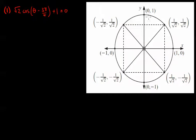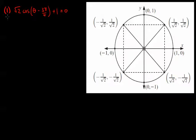Now that we've got all the skills to tackle looking at how to solve a complicated trig equation like this, we're probably going to use the unit circle with these coordinates to answer this question. What we have is root 2 times cos bracket theta take away 3π over 4 close bracket plus 1 equals 0.